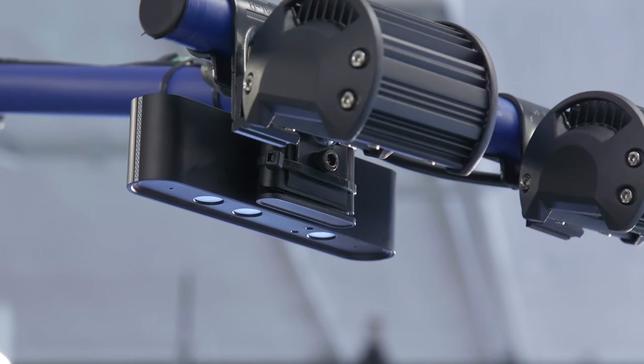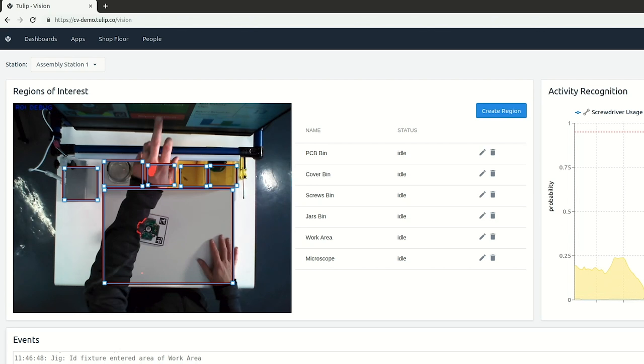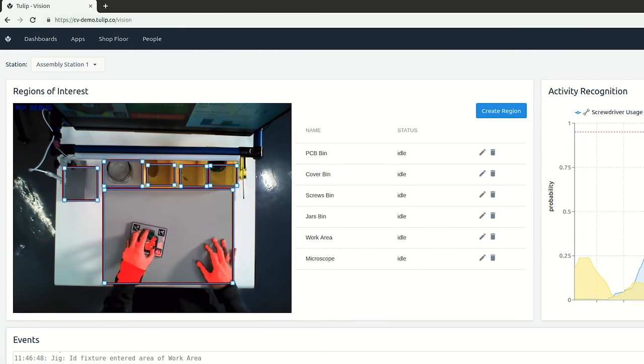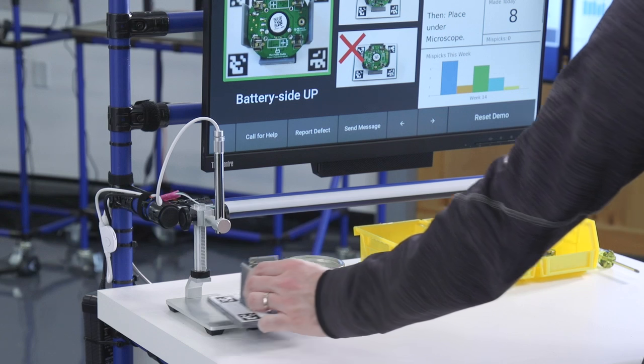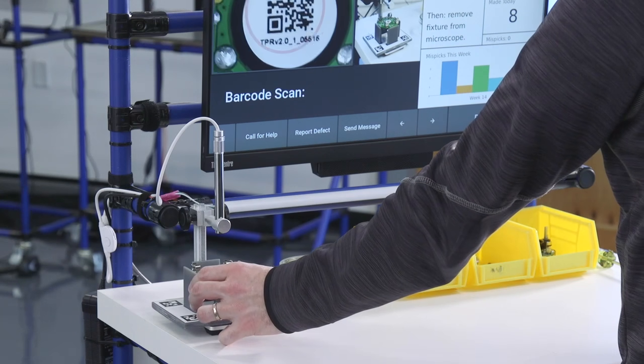By attaching an inexpensive camera to an existing workstation, Tulip manufacturing apps can easily be built to error-proof and enhance operator capabilities. In this manual assembly example,